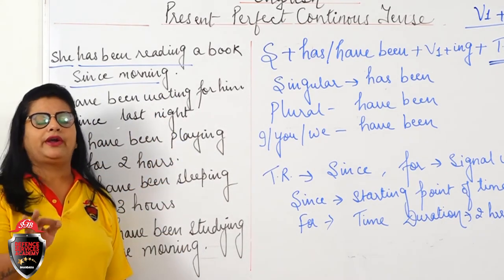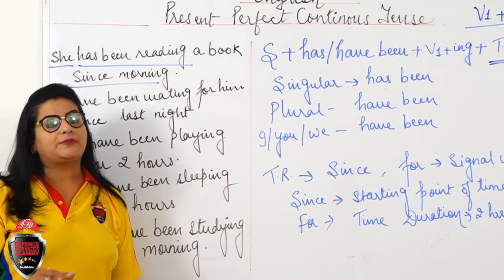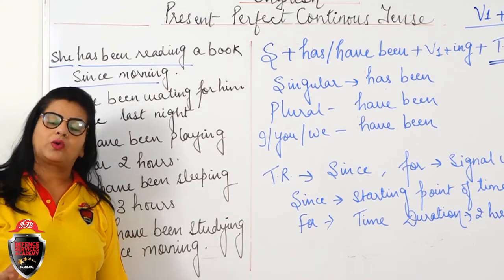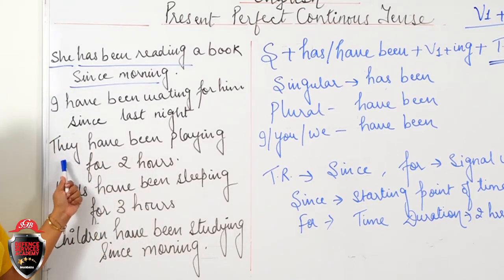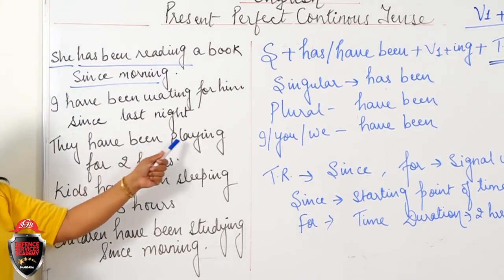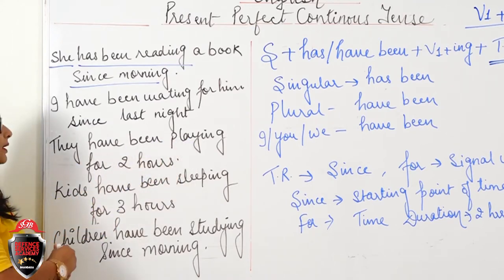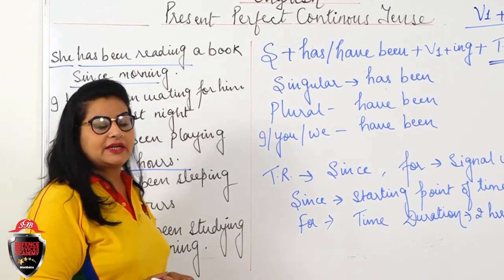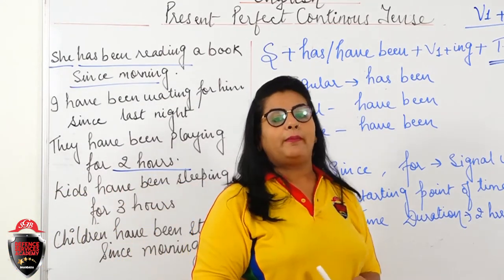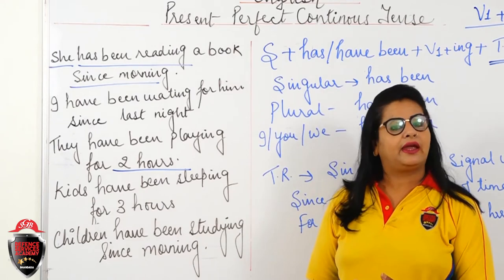Since is used with the starting point of action — when the action began. With 'they' — plural — we use 'have.' They have been playing for two hours. Here we are given a time duration, so 'for' is used. Woh pichhle 2 ghanton se khel rahi hain.